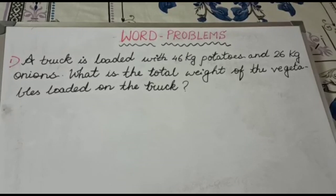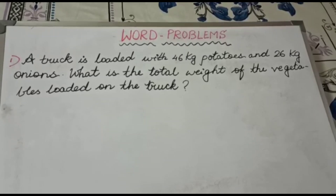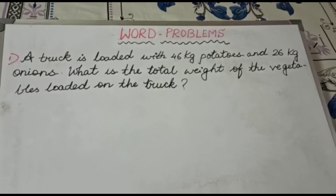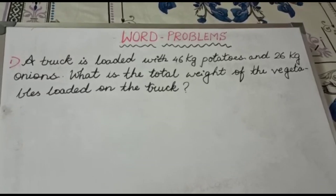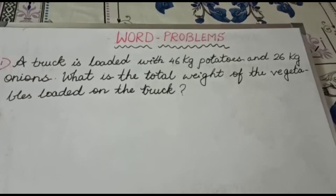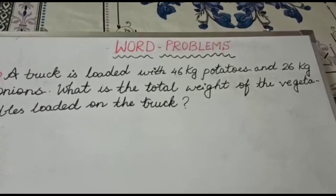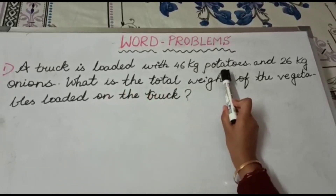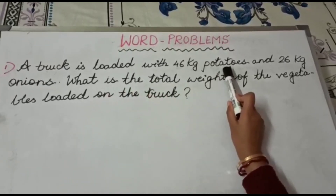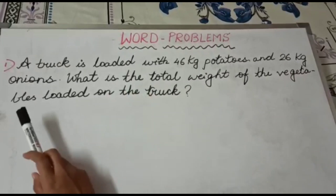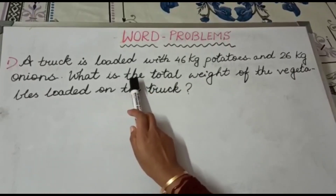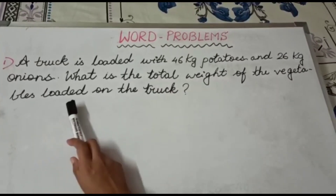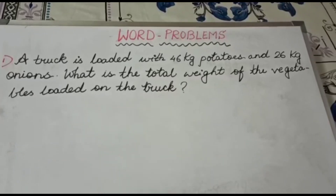Welcome to the maths class. Today in this maths class we will be doing word problems on addition of weight. Let us read out the question which is given here. A truck is loaded with 46 kg potatoes and 26 kg onions. What is the total weight of the vegetables loaded on the truck?